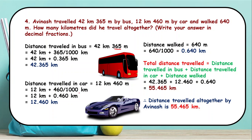He walked 640 meters, which converts to 0.640 kilometers. Now we need to find the total distance covered by Aminash by all three means — bus, car, and walking. Simply add the distances travelled by each means. That gives us 55.465 kilometers. So the total distance travelled by Aminash is 55 kilometers and 465 meters, or simply 55.465 kilometers.